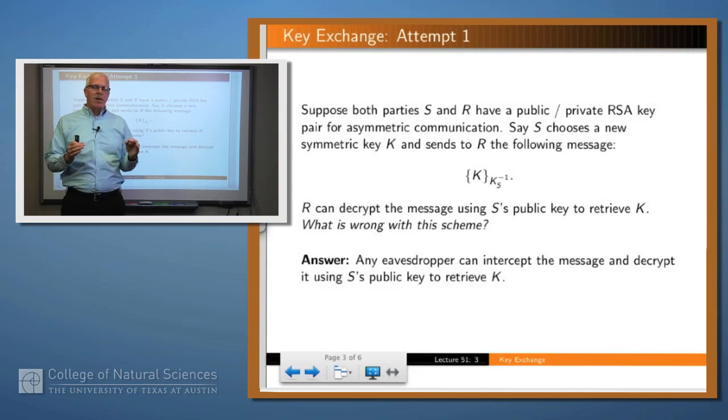Suppose that you have a public key infrastructure set up so that each party has a public key and a private key which they've kept close to the vest. Then you might imagine doing the following. Suppose that you take a new symmetric key and you encrypt it with the sender's private key. Then you're sure that it came from the sender, for example.